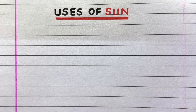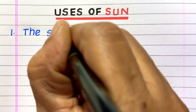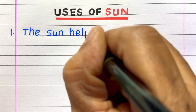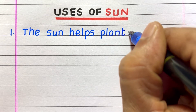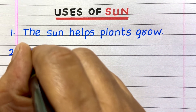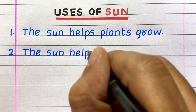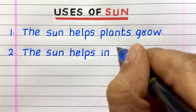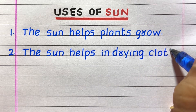Hello everyone, welcome to my channel. In this video I'll write 10 uses of the Sun. First use of Sun is the Sun helps plants grow. Second, the Sun helps in drying clothes.